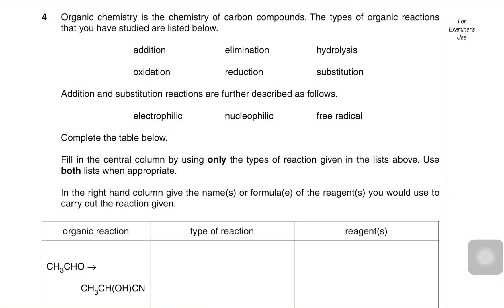Welcome back to another video by Cam Room 5. Last time we did a practice of organic synthesis, and in today's video we are going to be doing another question. The question says: organic chemistry is the chemistry of carbon compounds. The types of organic reactions that you have studied are listed below. Addition and substitution reactions are further described as follows. Complete the table by filling in the central column using only the types of reaction given in the lists above, and in the right-hand column give the names or formulae of the reagents you would use to carry out each reaction.